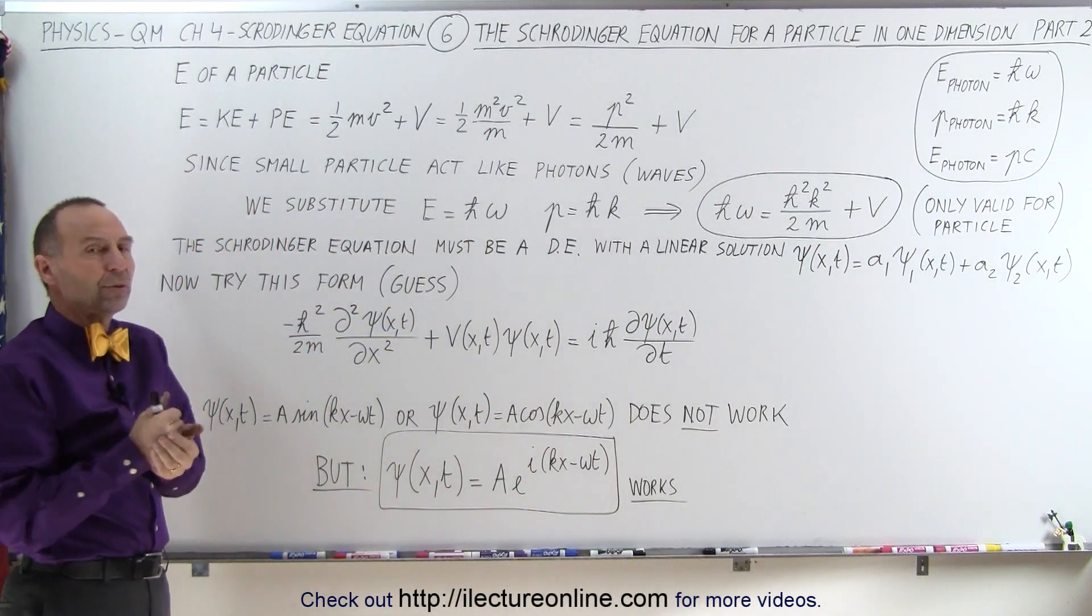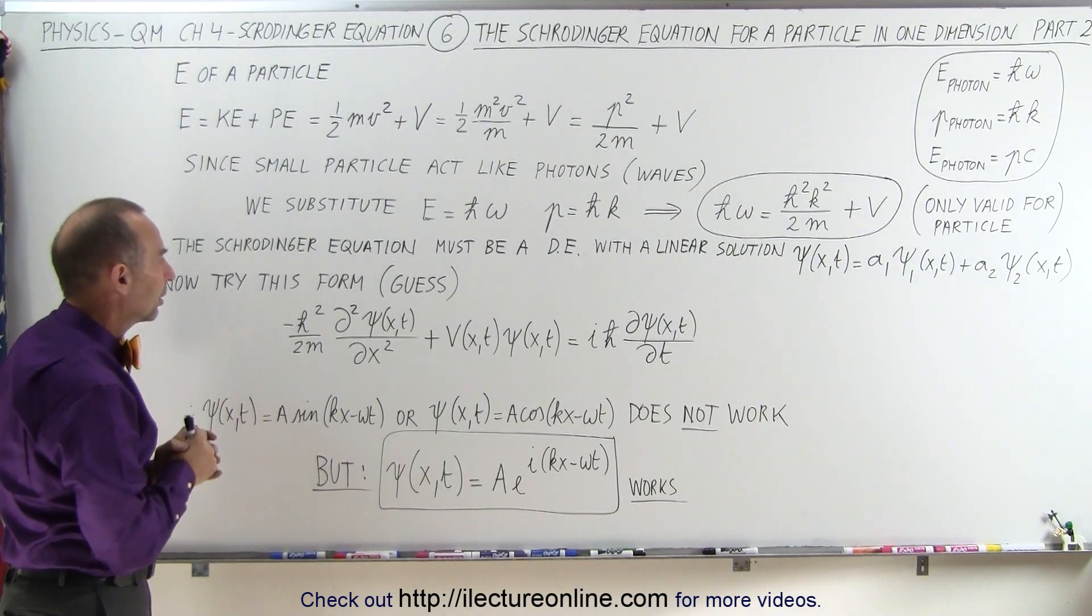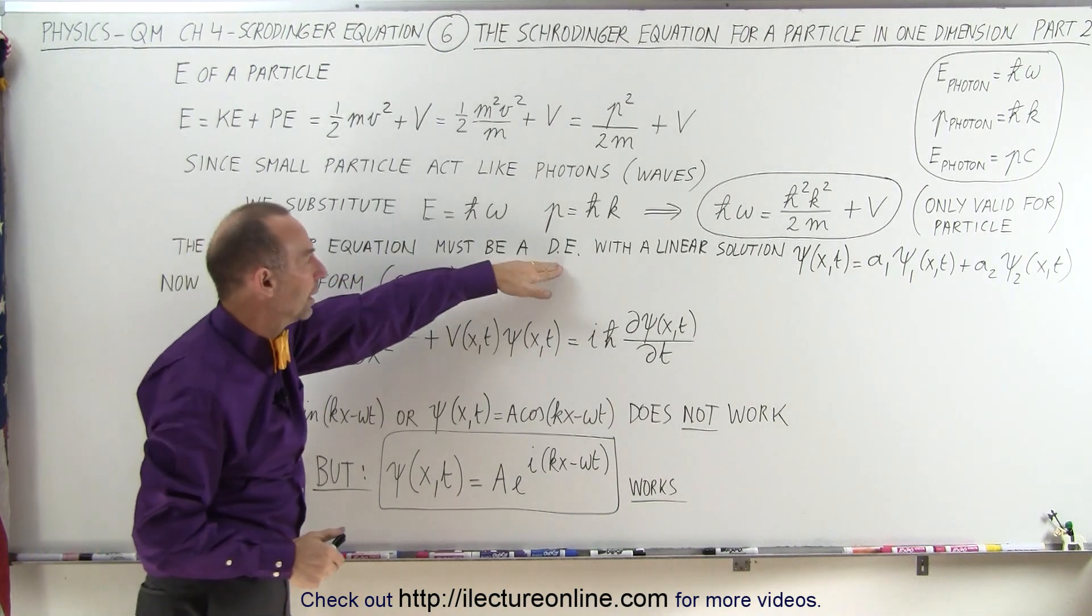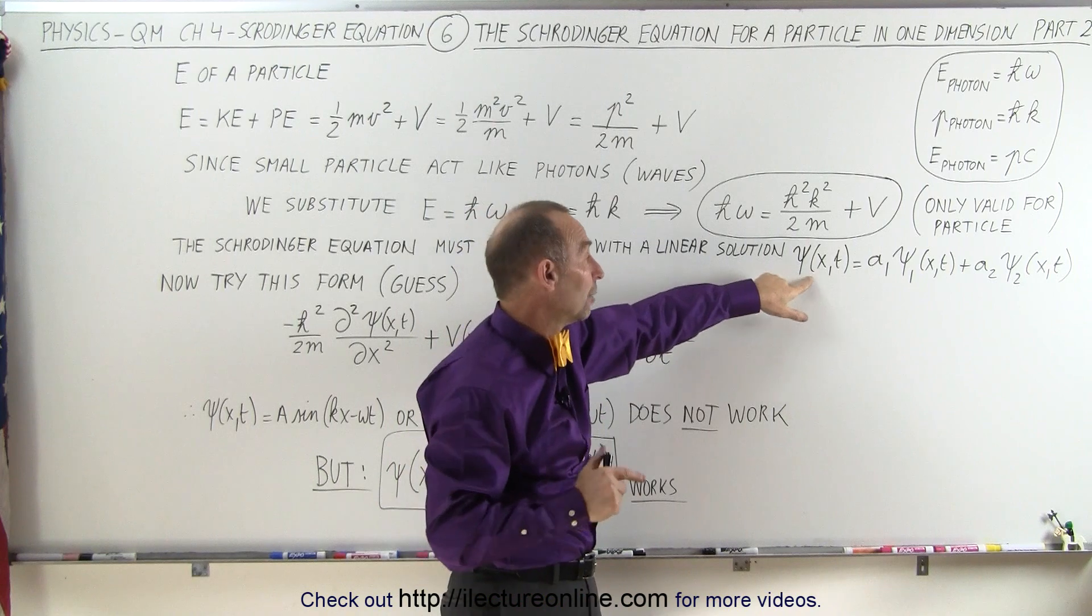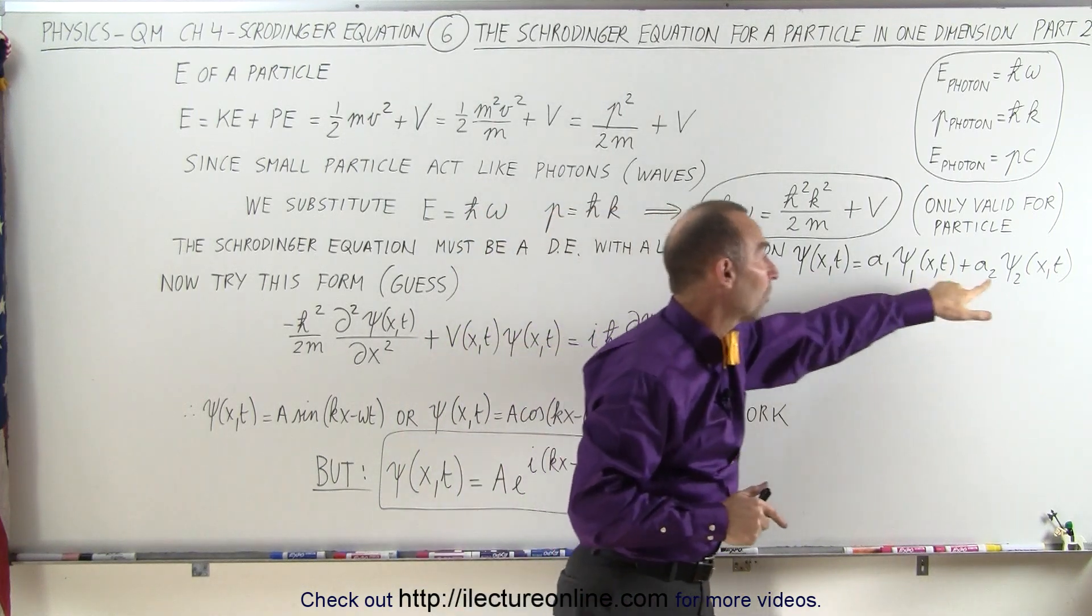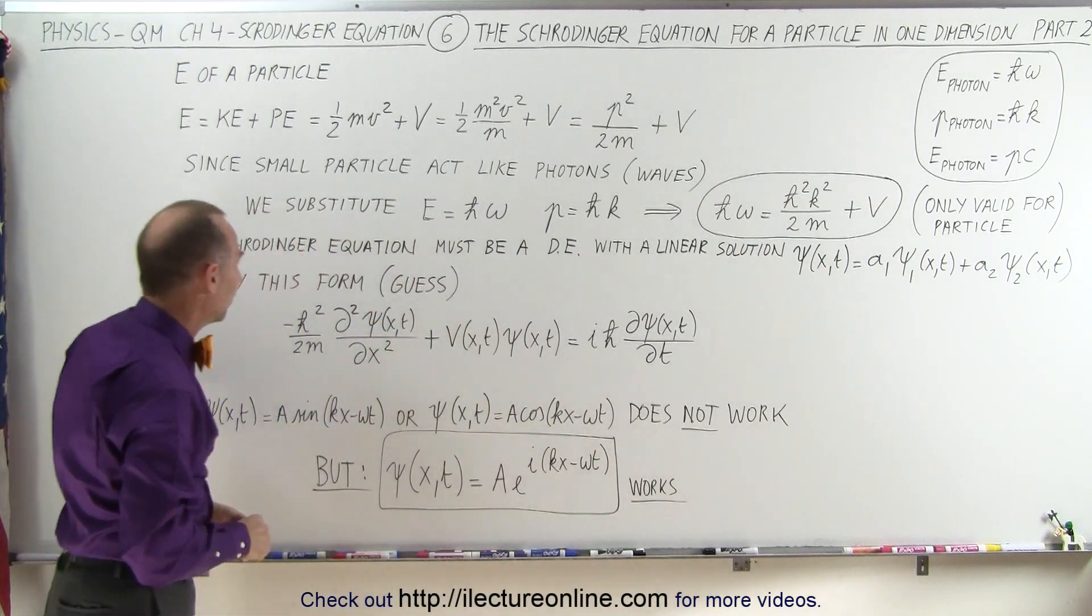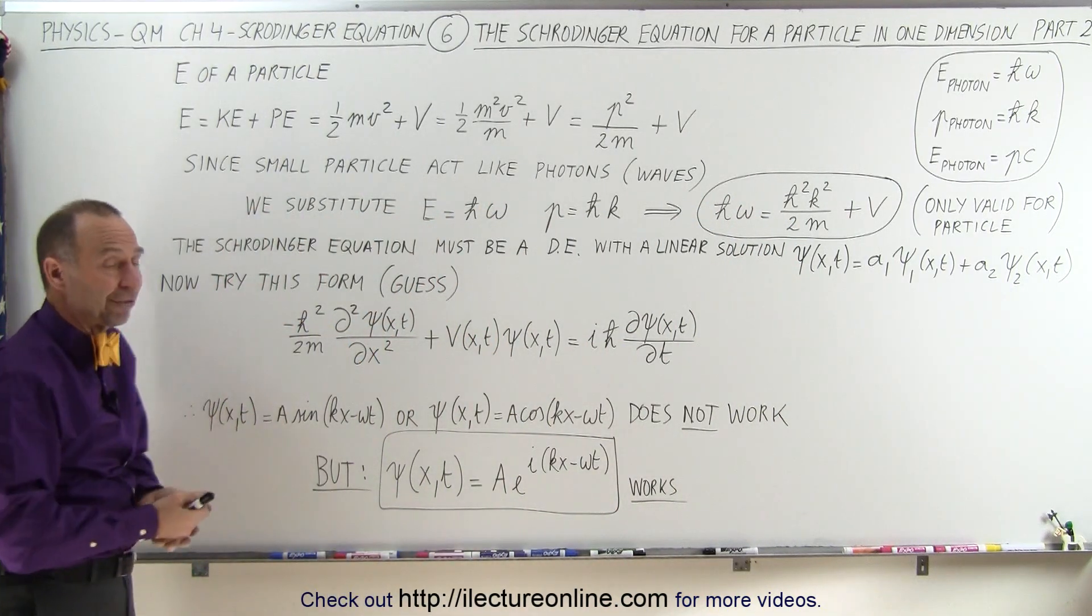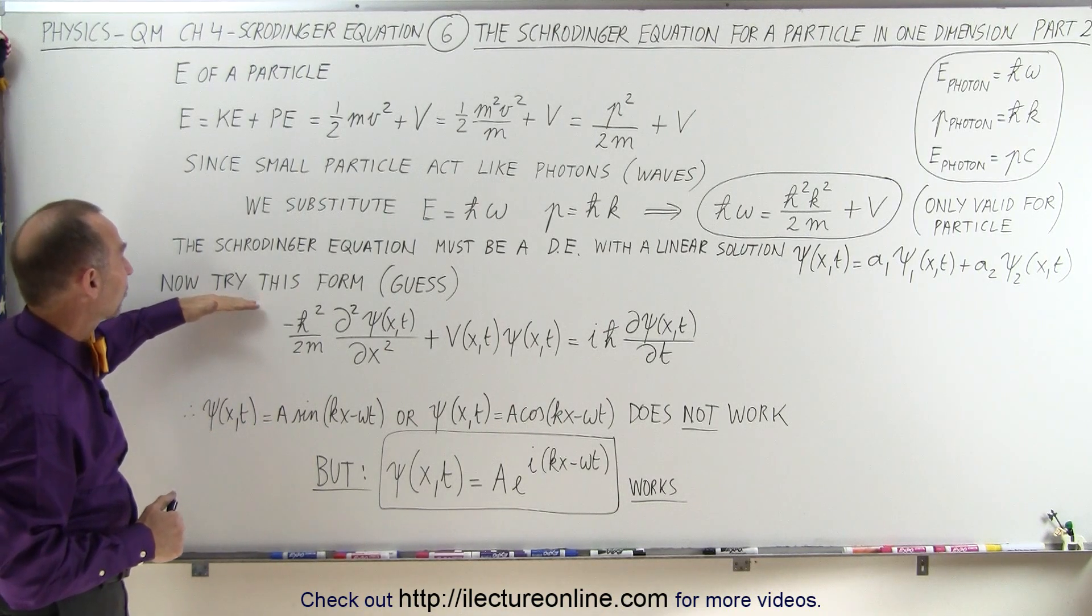So now the next thing we're going to do is we're going to try to come up with a Schrödinger equation describing this particle in one dimension. We know that the differential equation has to be a linear solution. In other words, we should be able to write the Schrödinger equation as the sum of two linear equations like that. So what is this equation going to look like? Well, they took a big guess. Matter of fact, they probably guessed quite a number of times, tried to work it out.